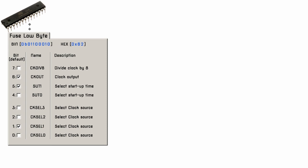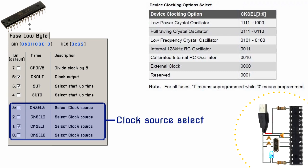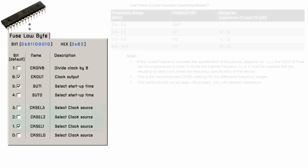New ATmega328P chips generally have the following fuse settings. The ATmega chips can be run at different speeds or frequencies determined by the clock source used. The clock signal can come from an internal oscillator, an external crystal resonator, or an external signal. We will use the ATmega328P chip with an external 16 MHz crystal. Therefore, we need to program the bits of the fuse low byte accordingly. Bits 3 to 0 control the oscillator choice, and the default setting is to use the calibrated internal RC oscillator, which we don't want.